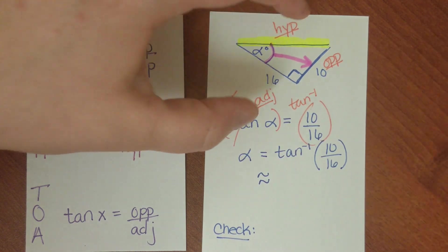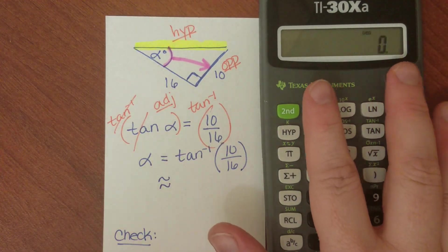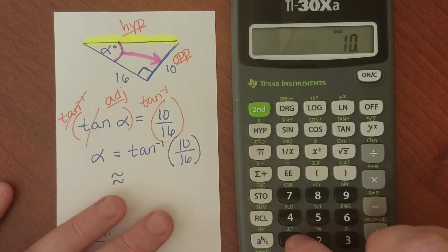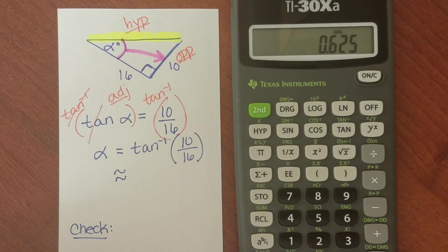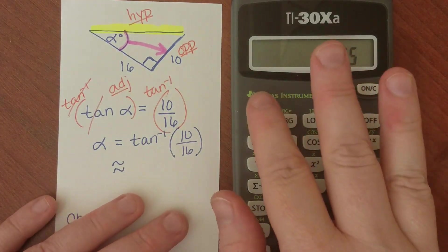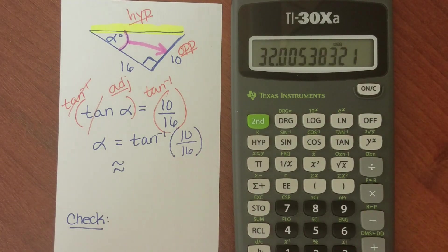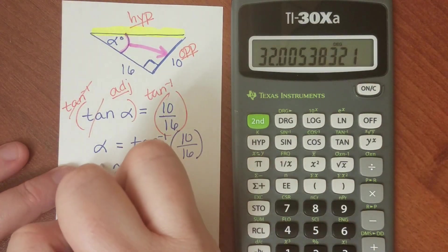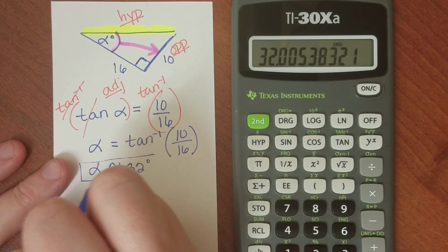To undo taking the tangent of our angle, I'm going to take the tan inverse of both sides. These undo each other, so I'm going to have angle alpha equal to the tangent inverse of 10 over 16. If I plug that into a calculator: 10 divided by 16 is 0.65, and if I take the inverse tan of that using my second key, my angle should be 32 degrees. So angle alpha is equal to 32 degrees.